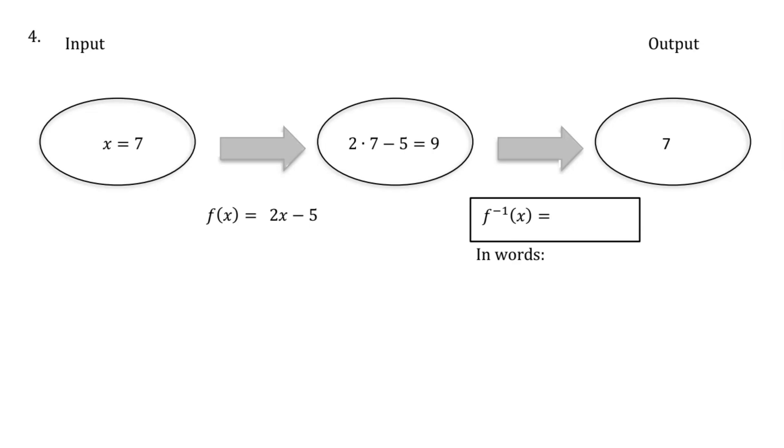In each situation, the first eight problems have an input of x equals 7, and we're putting that into some f(x) function and getting a temporary output in the middle. Then we're taking that number and putting it into the inverse function, and we're ending up with 7 again. In each case, when we put the number 7 into f(x) and then put the result into f inverse of x, we should end back up where we started at 7.